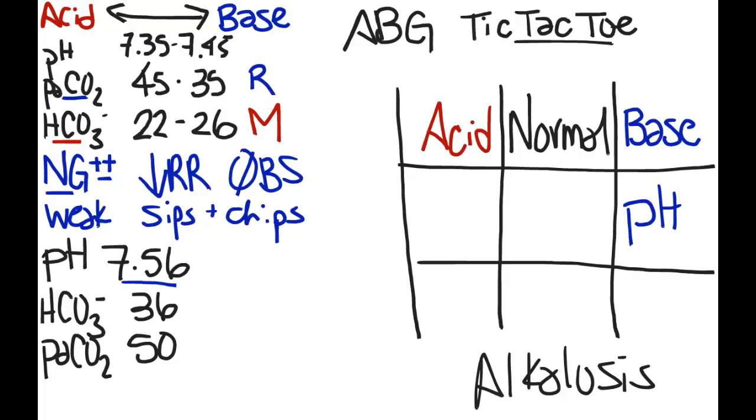Next we go on to our bicarb, which is 36, and that is also on the basic side. This indicates that our patient is in metabolic alkalosis.